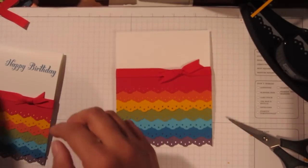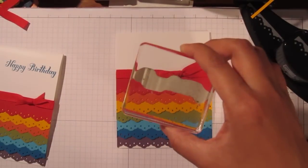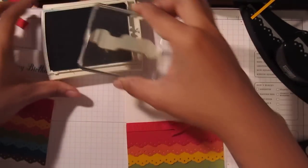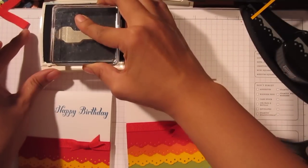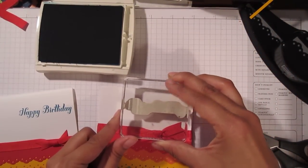And then I'm going to take my sentiment that says happy birthday. And this is for the stamp set called bring on the cake. I'm going to stamp this in Pacific Point which is one of my favorite colors.